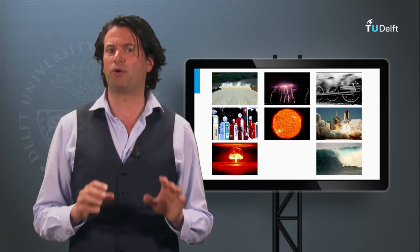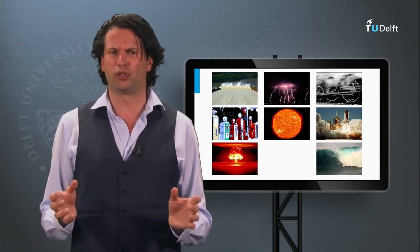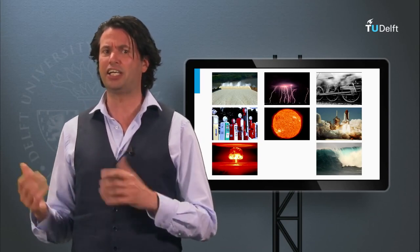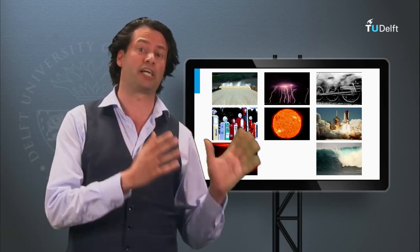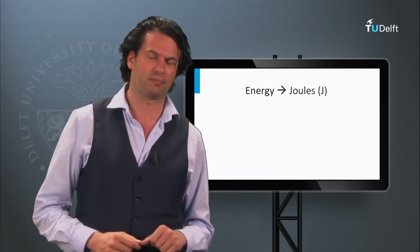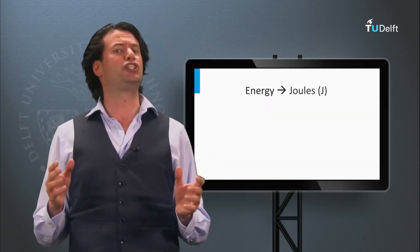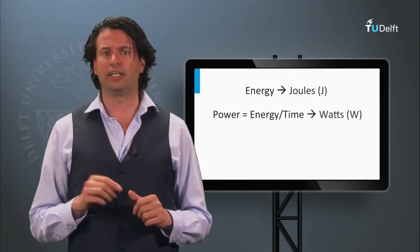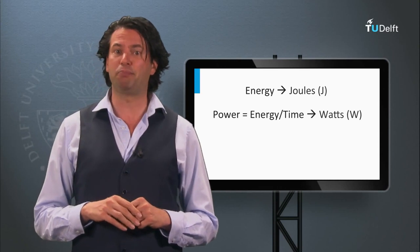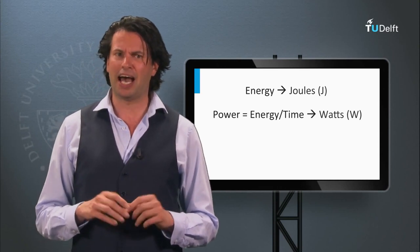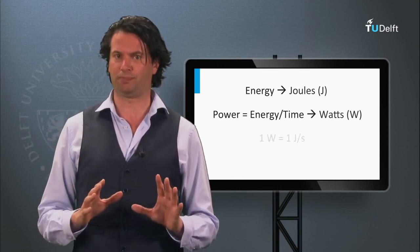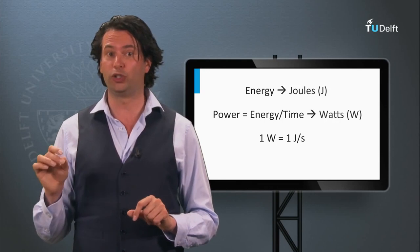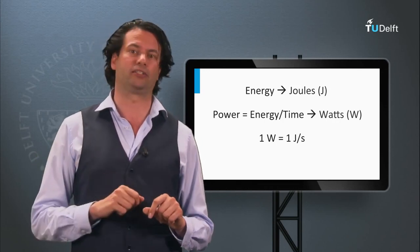An example is the electric motor. This is a tool in which we convert electrical energy into mechanical energy. The unit of energy is joule. Power is the energy per time and is expressed in watts. One watt is one joule per second.